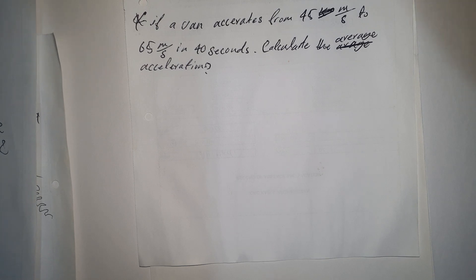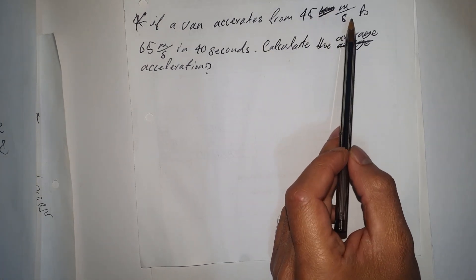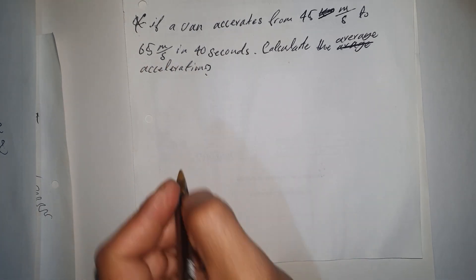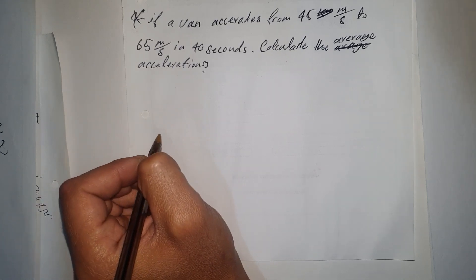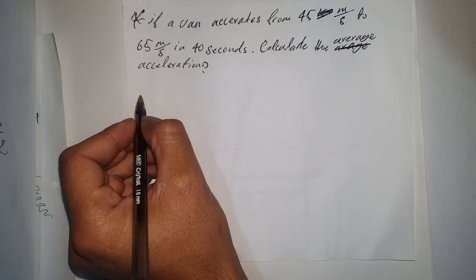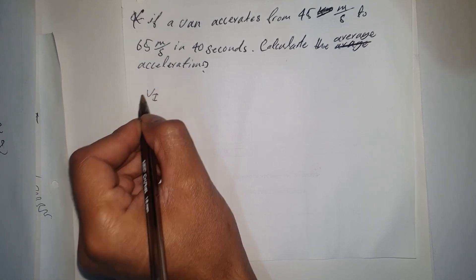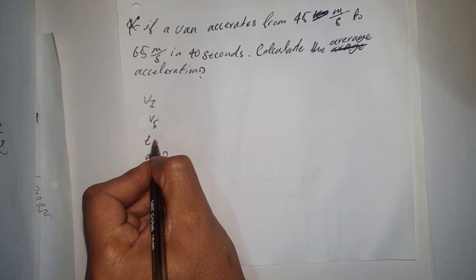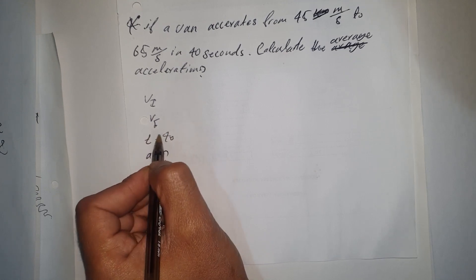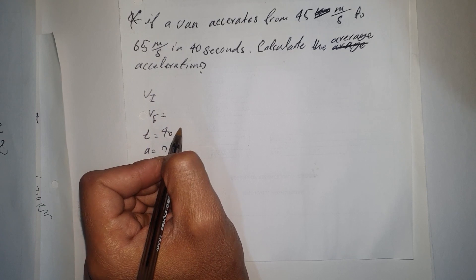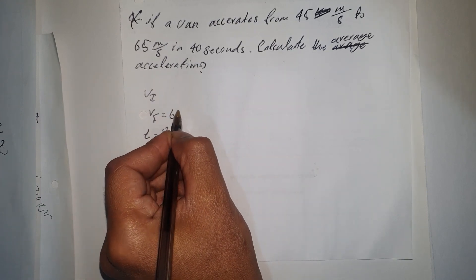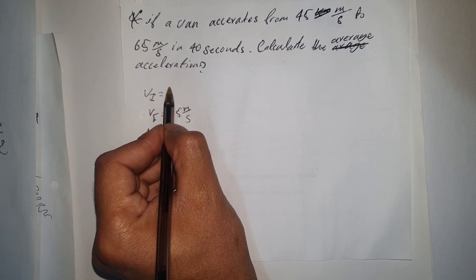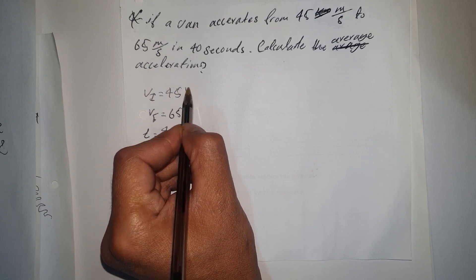Example: a van accelerates from 45 meters per second to 65 meters per second in 40 seconds — calculate the average acceleration. We list the known values: initial velocity = 45 m/s, final velocity = 65 m/s, time = 40 seconds, and we need to find acceleration.